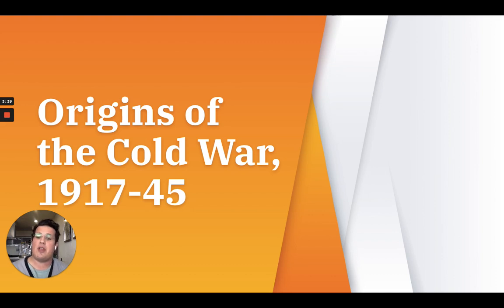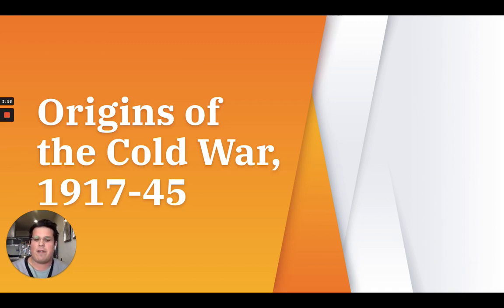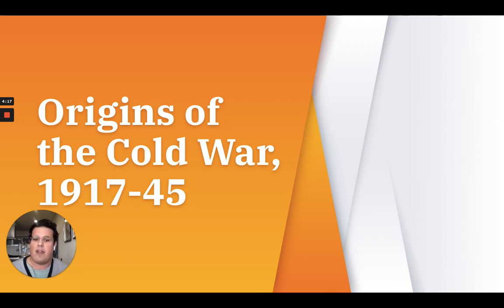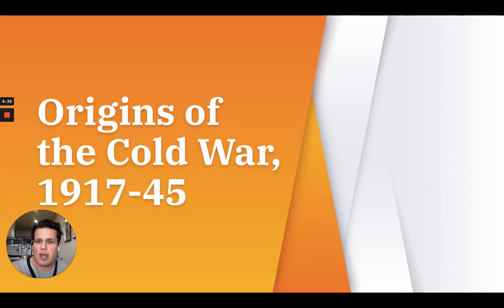Today we're going to be covering the origins of the Cold War from 1917 to 1945. What we're doing in this video is covering a timeline of the progression of the Cold War — from the beginning, which is arguably the Bolshevik Revolution, to the very end and its aftermath. In each of the chapters we cover, we're going to follow the chronology of actual events. At the beginning of each presentation, I will give you a diagram for each section so that we can analyze it and arrange our notes accordingly.